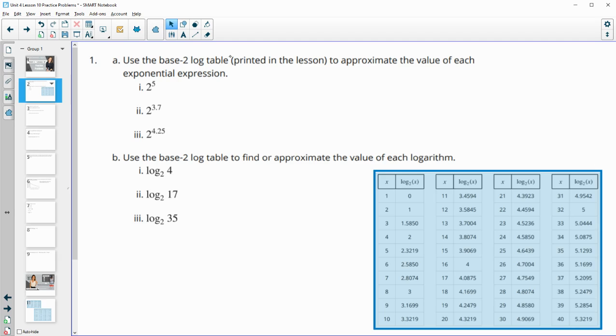Number one says, use the base two log table that was printed in your lesson, and I have it here on the screen, to approximate the value of each exponential expression. So it's just having you practice using this table. So even if you know what two to the fifth power is, use that to help you to make sure you read this table right. So remember that the log table, the input is the answer to the exponential, and this log base is the exponent. So we want to be looking for this exponent of five in the output. So then that brings us over here, which tells us that two to the fifth power is equal to 32.